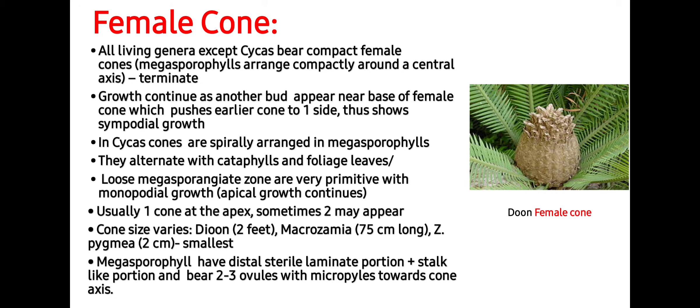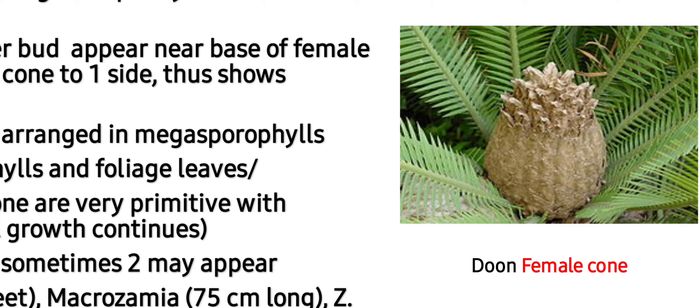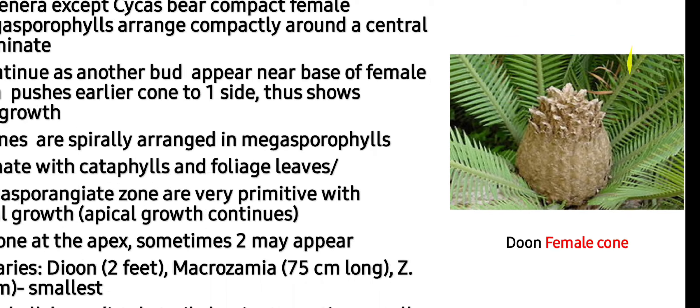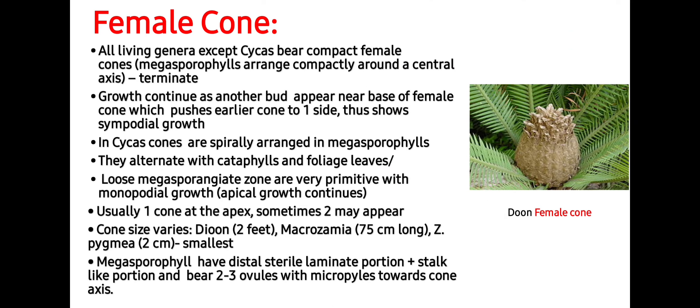Next is the female cone. All living genera except Cycas bear compact female cones, with megasporophylls arranged compactly around the central axis, and they are also terminal. Here is the Dioon female cone. Growth continues as another bud appears near the base of the female cone, which pushes the earlier cone to one side, thus showing sympodial growth.